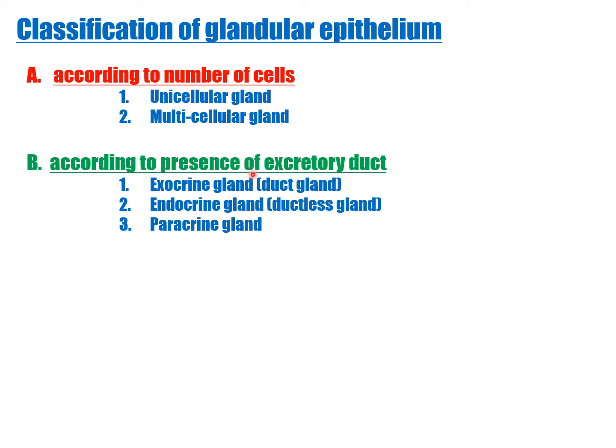Classification according to the presence of an excretory duct: exocrine glands (duct present) and endocrine glands (ductless). Exocrine glands pour their secretion onto the epithelial surface through a duct. Examples of exocrine glands: all three salivary glands — parotid, submandibular, and sublingual.